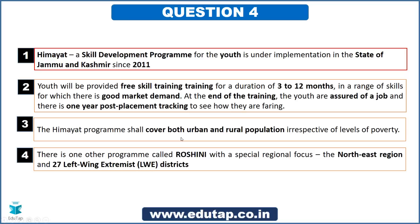There is also one other scheme called Nai Roshni — not to be confused with Roshni. Think about what Nai Roshni is. Also, the report released by the NGO Pratham is called ASER — start linking these facts. Pratham is an NGO; remember the report it releases, which is related to the education sector. These small connections are actually going to help you in the examination.